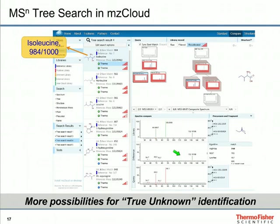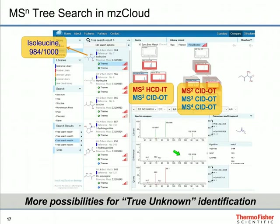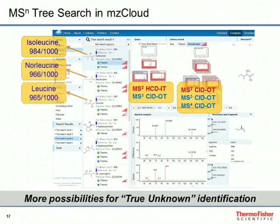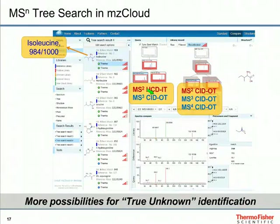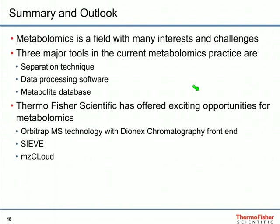Please note that the search algorithm has a very high tolerance to differences in fragment type and mass accuracy. In this particular case, the MS2 for the query and the library is totally different — for the query spectra, it is HCD with ion trap detection, while for the library entry, it is CID with Orbitrap detection. MZCloud still gives a very good score, showing that MZCloud provides very abundant information and a lot of possibility to identify unknowns. As a summary, metabolomics is a field with many interests and challenges. There are three major tools in metabolomics practice, and Thermo Scientific has offered exciting opportunities for metabolomics.